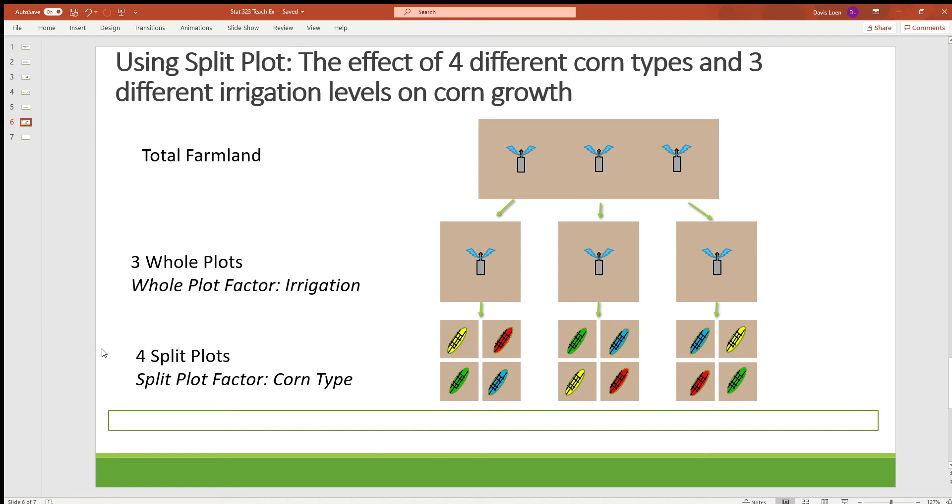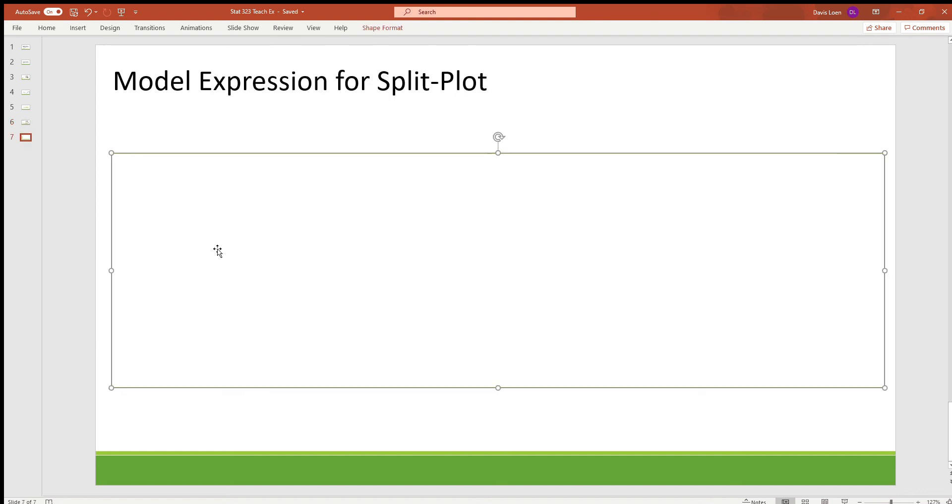Now because we're changing the numbers of how many factors there are, so we have three whole plots and four split plots, which is different than 12 separate experimental units that are independently randomized, and how the treatment combinations are assigned, we have to change our model.